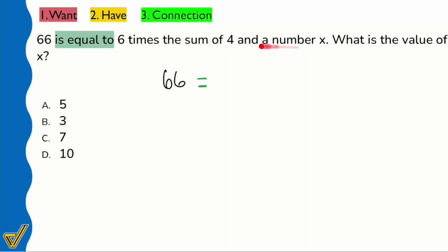This is the confusing part. Six times the sum of four and the number x. It's so easy to think that you're supposed to multiply six times four and nothing else. It's so easy to make that mistake, but watch this.